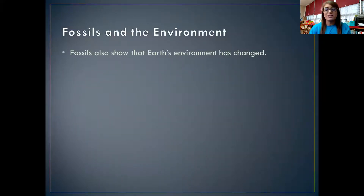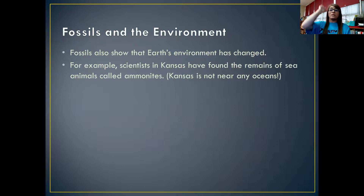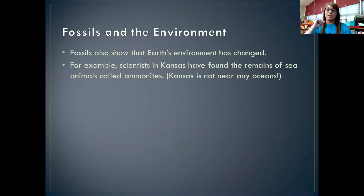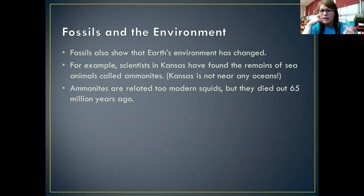Fossils also show that Earth's environment has changed. For example, scientists in Kansas have found the remains of sea animals called ammonites. Kansas is not near any oceans — it is two states above Texas: Texas, Oklahoma, and then Kansas. Ammonites are related to modern squids, but they died out about 65 million years ago. So how in the world was there a fossil of an ammonite in Kansas if Kansas is nowhere near water?